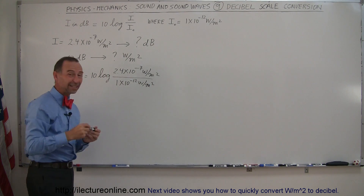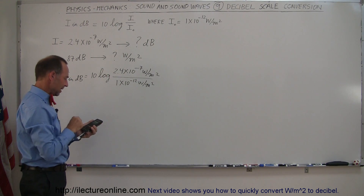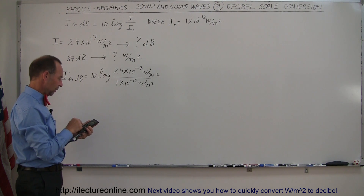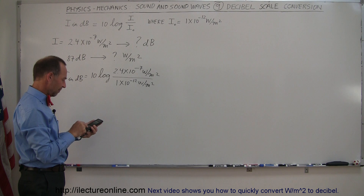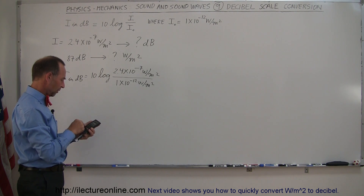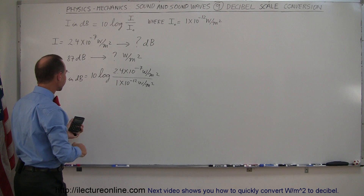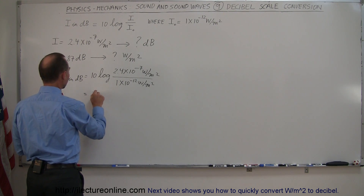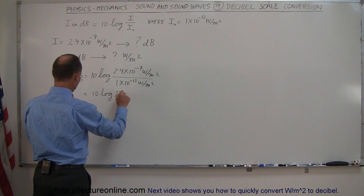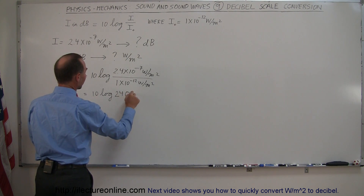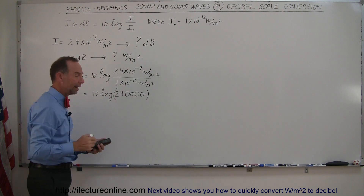For this one, you're going to need a calculator because you cannot do that in your head very easily. So we take 2.4 × 10⁻⁷ divided by 1 × 10⁻¹². What we get is 10 times the log of a number, which is 240,000 — that's 2.4 with four zeros. So now we need to take the log of that.